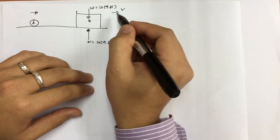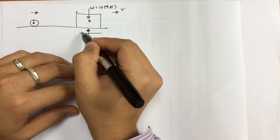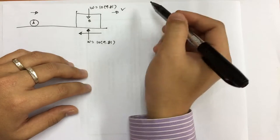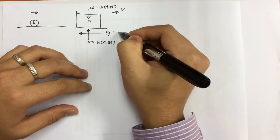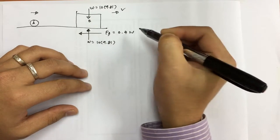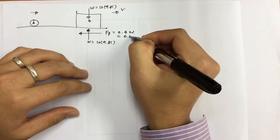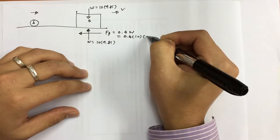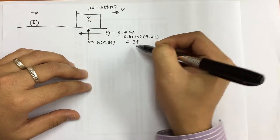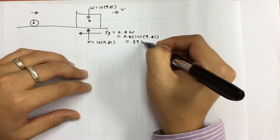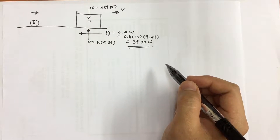Since the block is moving to the right and we are given the coefficient of friction, we can get the friction force acting against the movement. The friction force FF = 0.4 times the normal force = 0.4 × 10 × 9.81, which gives us a friction force of 39.24 Newtons.